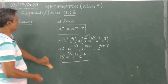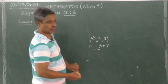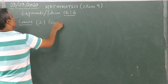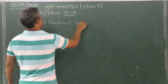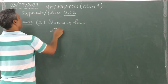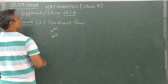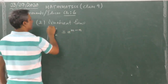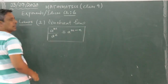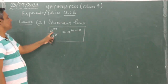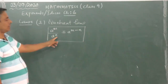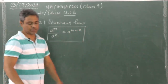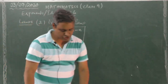Moving on to the second law, which is called the Quotient Law: a to the power of m divided by a to the power of n is equal to a to the power of m minus n. Another way to say it is the power in the numerator minus the power in the denominator.